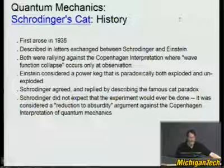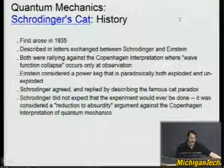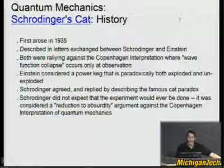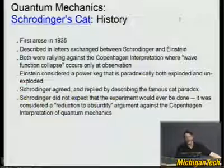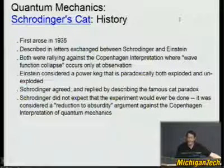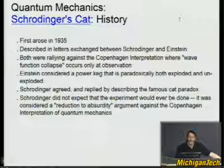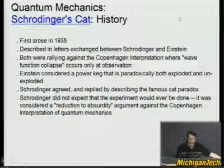Schrödinger did not actually expect that this experiment, or a non-killing version of it, would ever be done. Einstein and Schrödinger considered it a reduction to absurdity: isn't it so absurd that, according to the Copenhagen interpretation, the cat is both dead and alive, that it just can't be true? Since Copenhagen was the usual interpretation given to quantum mechanics, they argued that quantum mechanics must therefore be an incomplete theory — and although it might seem to predict the results of experiments, we should dig deeper and hopefully know better soon.